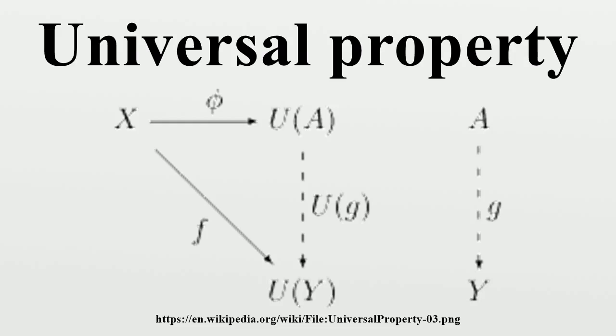History. Universal properties of various topological constructions were presented by Pierre Samuel in 1948. They were later used extensively by Bourbaki. The closely related concept of adjoint functors was introduced independently by Daniel Kan in 1958.